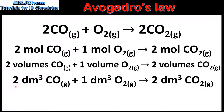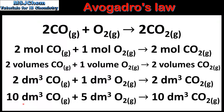So 2 cubic decimetres of carbon monoxide will react with 1 cubic decimetre of oxygen to produce 2 cubic decimetres of carbon dioxide. And 10 cubic decimetres of carbon monoxide will react with 5 cubic decimetres of oxygen to produce 10 cubic decimetres of carbon dioxide. To summarize, if a reaction is carried out at a fixed temperature and pressure, we can treat the mole ratios as volume ratios.